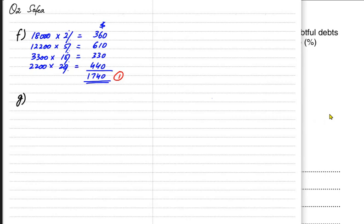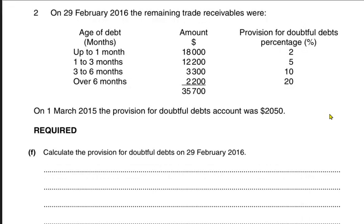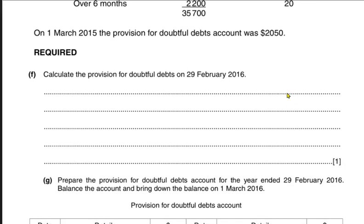This is the provision and it is based on the length of time the customer is taking to pay us. As the length of time increases, our doubt would also increase.